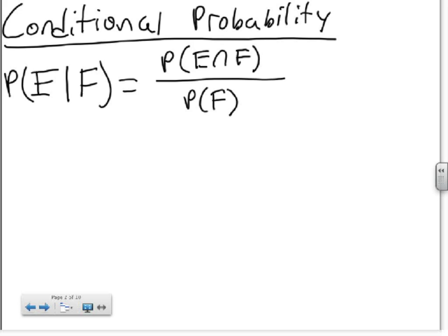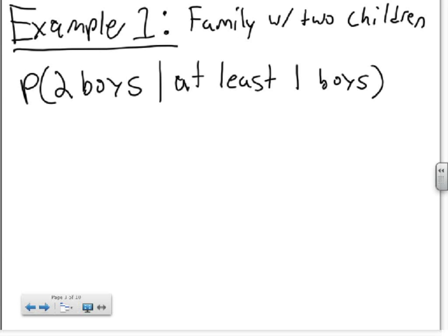The best way to explain this would be through a simple example. Say you have a family with two children and you want to find the probability that this family has two boys given that you know there is at least one boy. So at first you have to find the sample space.